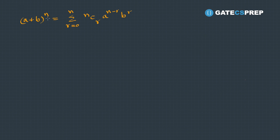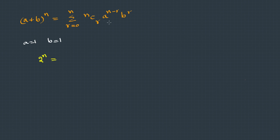We know that (a + b)^n is the summation of nCr * a^(n-r) * b^r. If we substitute a = 1 and b = 1, the left-hand side becomes 2^n. On the right-hand side, since a and b are both 1, only nCr remains. So: summation of nCr from r = 0 to n equals 2^n, i.e., nC0 + nC1 + ... + nCn = 2^n.